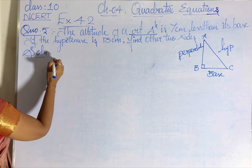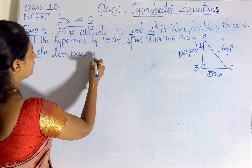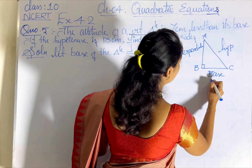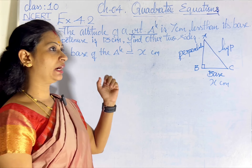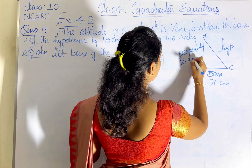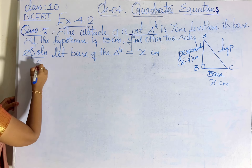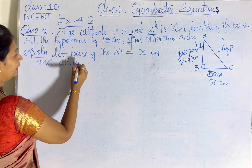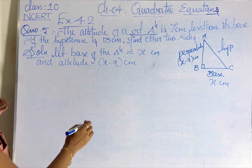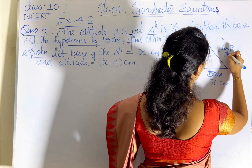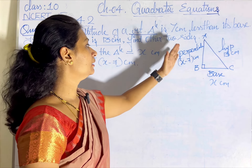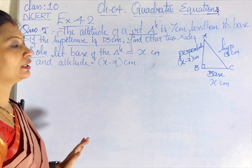Let me take ABC as a right triangle with right angle at B. Let the base of the right triangle be x cm. If the base is x cm, then the altitude will be x minus 7 cm, since the height of the triangle is 7 cm less than the base. It is also given that the hypotenuse of the triangle is 13 cm. We need to find the base and the perpendicular — the altitude of the triangle.